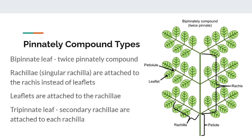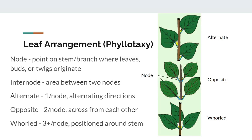In phyllotaxy, a node is a point on the stem where leaves, buds, or twigs originate. The area of the stem between two nodes is called an internode. There are three main types of leaf arrangements that differ based on the number of leaves per node. Alternate leaves have only one leaf per node and they typically face in alternating directions. Opposite leaves have two leaves per node and they are positioned across the stem from each other. Whorled leaves have three or more leaves per node and are all positioned around the stem in a circle.